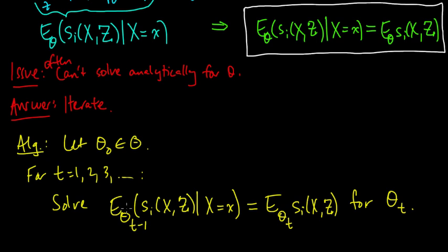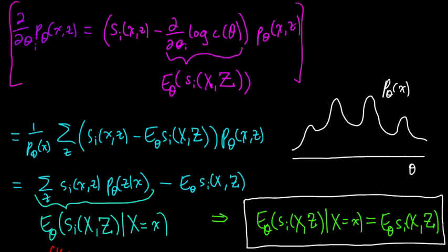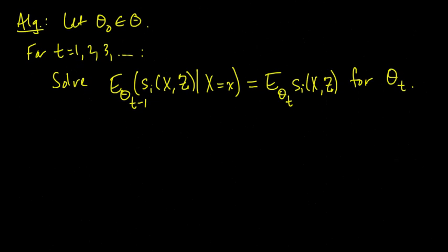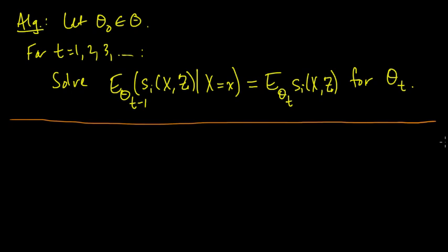This iterative procedure might start looking something like EM — we're iterating over this parameter, and this looks like the expectation step in EM. In EM we had a conditional expectation given x, but there it was the log of the joint probability, whereas here we got the expected value of the sufficient statistic. It's not necessarily looking like the same algorithm, but it turns out that they are the same, at least for exponential families. Here's why.